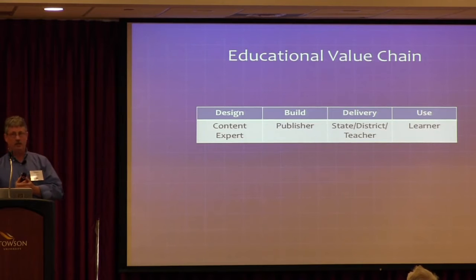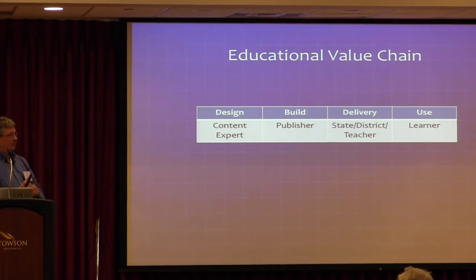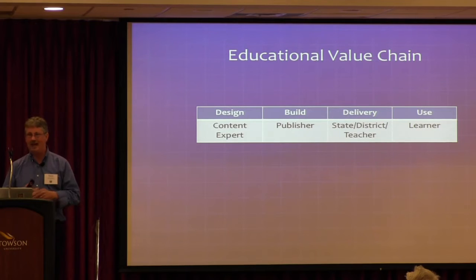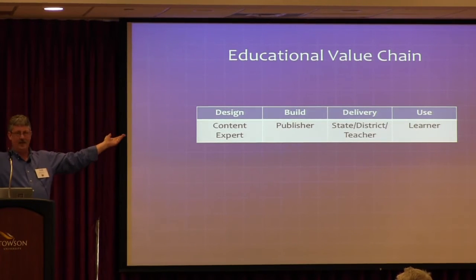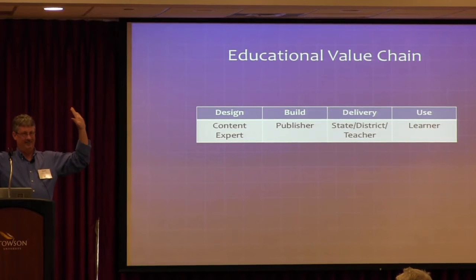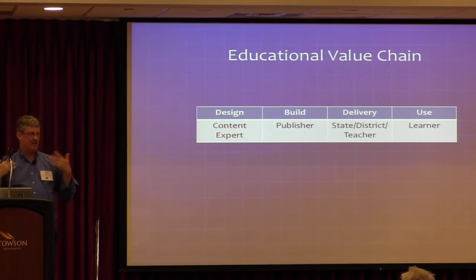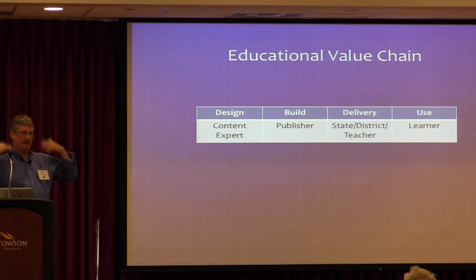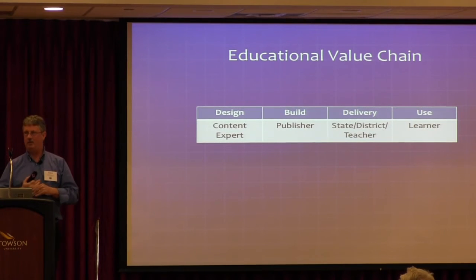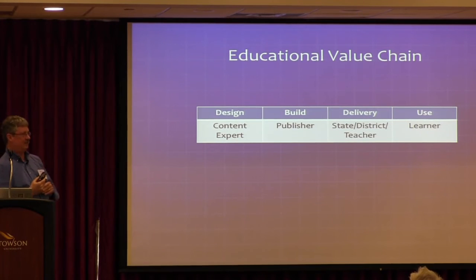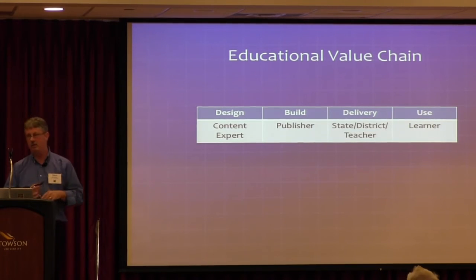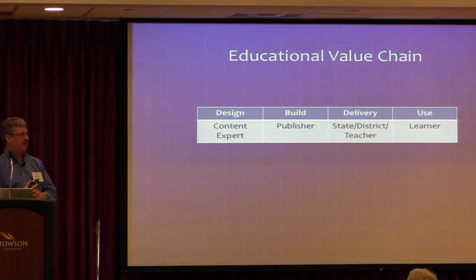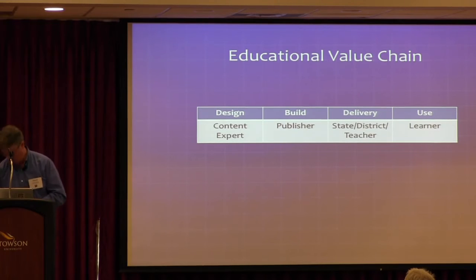The third example: let's look at the educational value chain. The issue here is we start with content experts. The problem with the content expert is they are all about their subject — not about diverse students. They are going to design this probably like they were taught and how they like to learn. When content experts know very little about diverse learners, we get stuck. The publisher theoretically adds value in terms of the containers they put our knowledge in, then gets it out through a state, district, or teacher — and ultimately it reaches the learner.